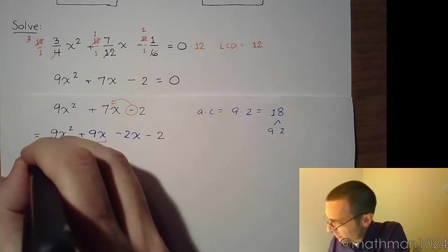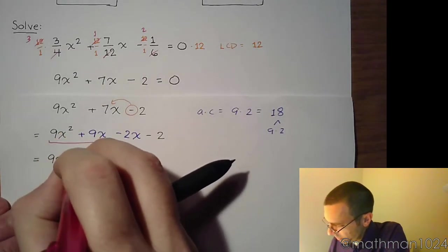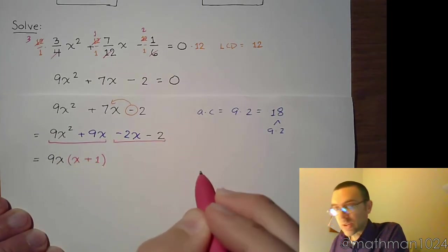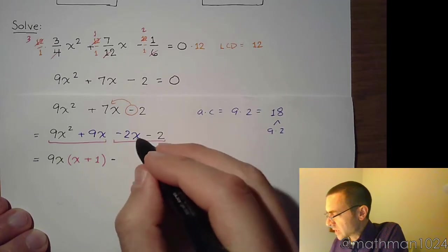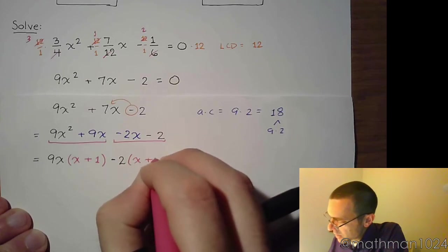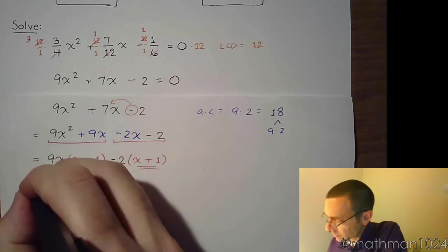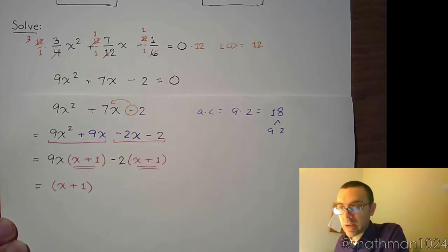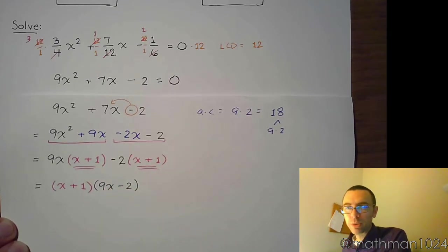So in the first group, the greatest common factor here is 9x. So we factor that out and we have x plus 1. In the second group, we lead off with a negative. So that's going to be part of our common factor. Both of these guys have a common factor of 2. So we're going to factor out that negative 2 and we have x plus 1. So now we can finish factoring by grouping. And this gives us x plus 1 times 9x minus 2. So that's how that polynomial factors.